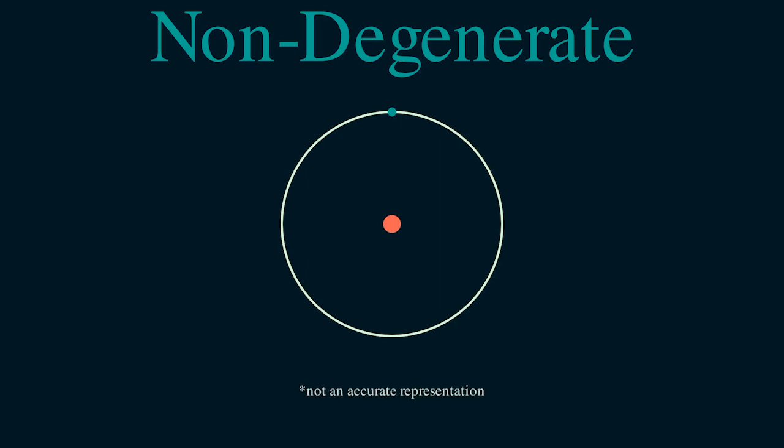As a concrete example, the 1D harmonic oscillator is a non-degenerate system since there is only one possible wave function for each energy value. This is in contrast to a system of an electron in a hydrogen atom where two different states of an electron can have the same energy.